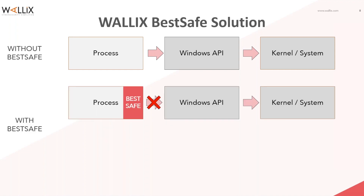The BestSafe agent operates at the application process level. It intercepts processes before they call the API and quickly runs an analysis to determine what operation the process is trying to carry out, from which process it was launched, and what APIs it plans to call.